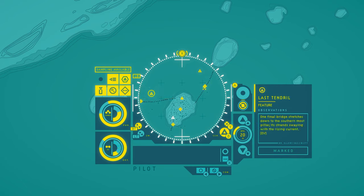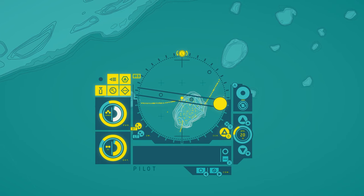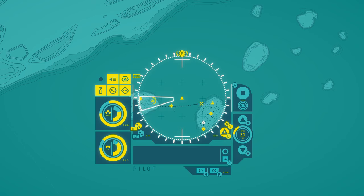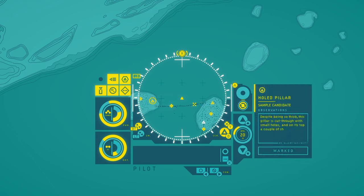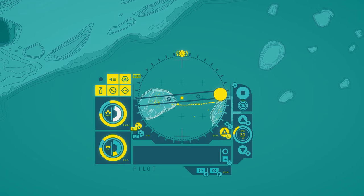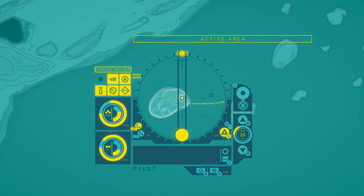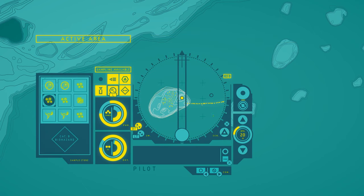Last tendril. One final bridge stretches down to the southernmost pillar, its strand swaying with a rising current. Despite being so thick, this pillar is cut through with small holes. And on its top, a couple of shell plates catch the light. Ooh, this is something new. Let's release some things. We don't really need bright pollen at all. I wonder if the creatures would react to it at all.